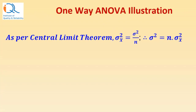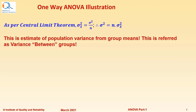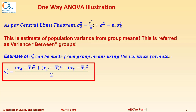Variance is the square of standard deviation, and therefore sigma-x-bar squared equals sigma squared divided by n. As per Central Limit Theorem, an estimate of sigma squared — the population variance — can be made as n times sigma-x-bar squared. This is the estimate of population variance from the group means, referred to as variance between groups. An estimate of sigma-x-bar squared can be made from the group means using the variance formula shown here.